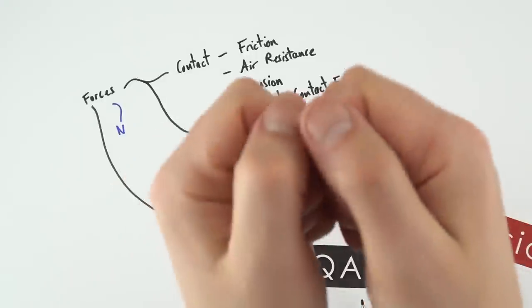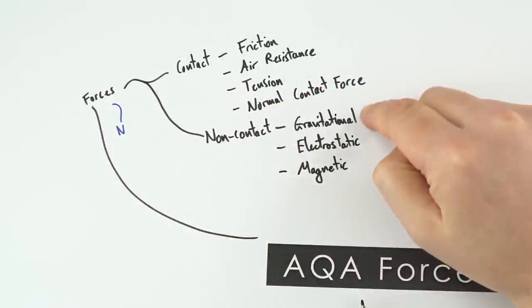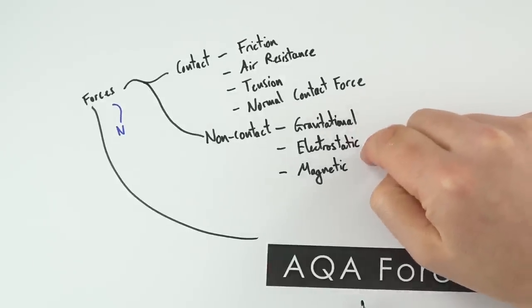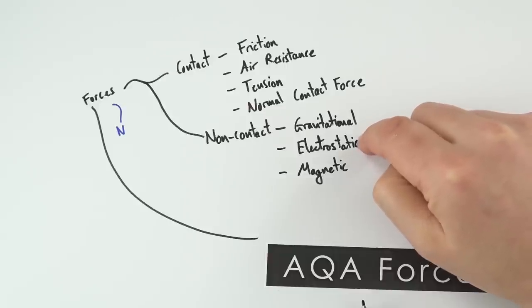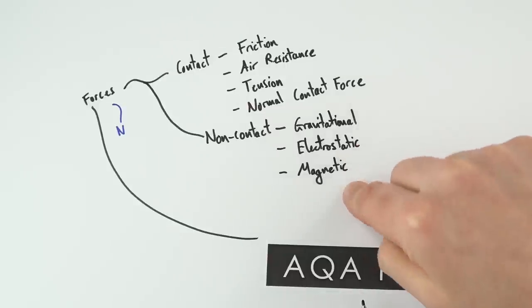Non-contact forces can act over a distance. So we might talk about the gravitational attraction between two masses. If you've got a negative and a positively charged object, you've got some electrostatic force, or the magnetic force as well.